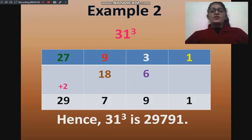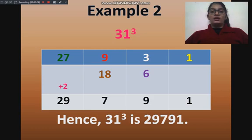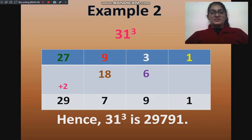If we find the cube by doing multiplication like 31 into 31 into 31, it will be very hard and it will take a lot of time. But using this method, it will be very easy as well as time saving.